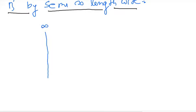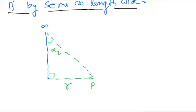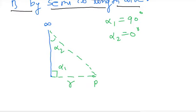One side is infinity, the other side is here, and you have to get the magnetic field at point P. Suppose this distance is R. So theoretically, alpha 1 will be 90 degrees and alpha 2 will be 0 degrees. We will use the formula: B is equal to mu naught upon 4 pi, and I upon R is the main part.